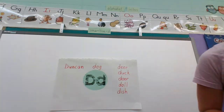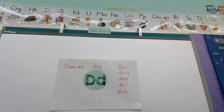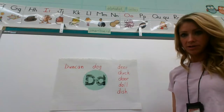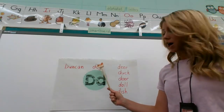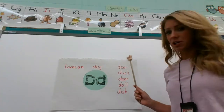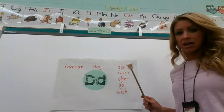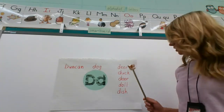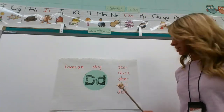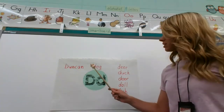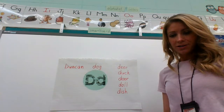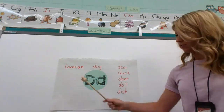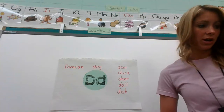Let's go ahead — I'm going to switch to my dog pointer, because I like that dog. I'll read it, you read it back to me. Here we go: D, dog, deer, duck, door, doll, dish, Duncan. Did you say all those words that started with a D? Very good — and then you thought of more that we would have put over here.